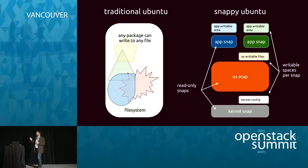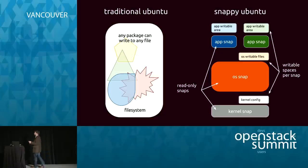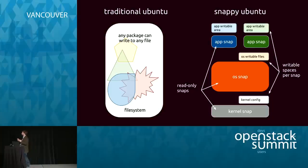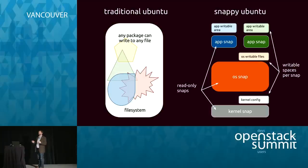In the Snappy world, it's a much more crisply delineated set of interaction points between the kernel, the OS, and the apps that sit on top. There's a kernel snap at the bottom with any kernel config required to boot a system. The OS is a little bigger but still pretty small, and it has some writable files it needs — network interfaces configuration, for instance. Each individual app has its own writable data.